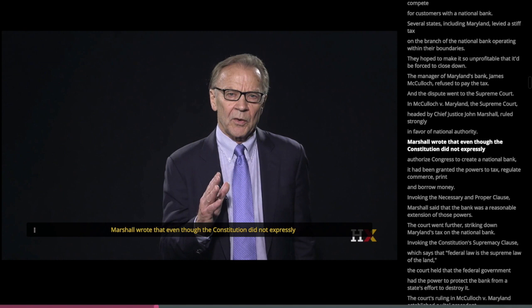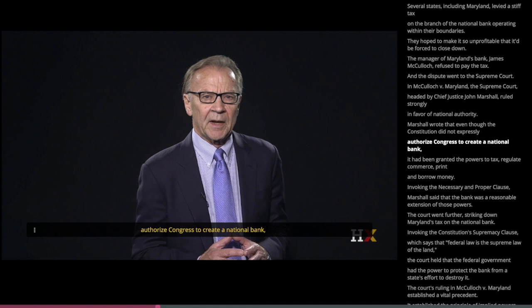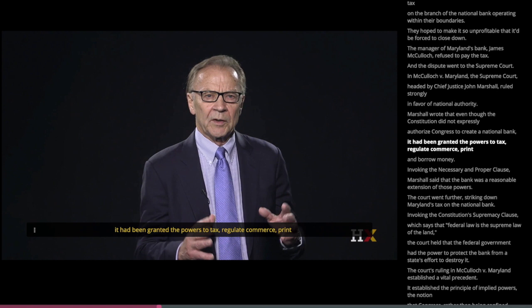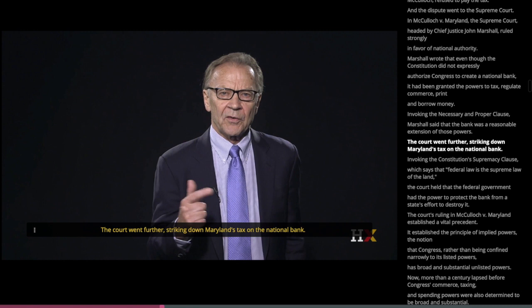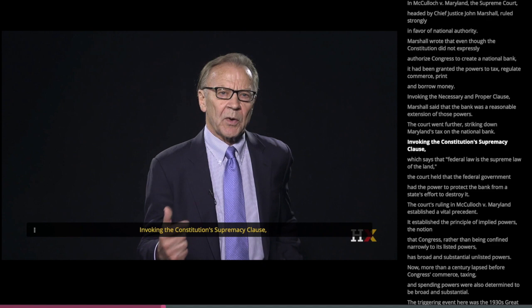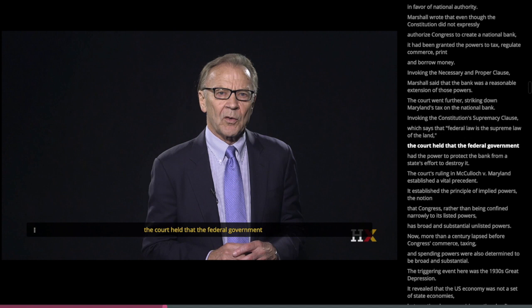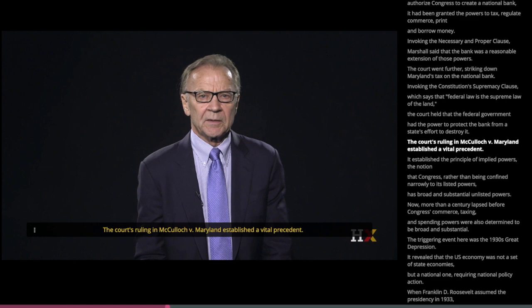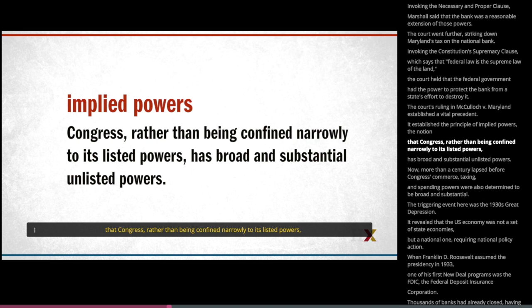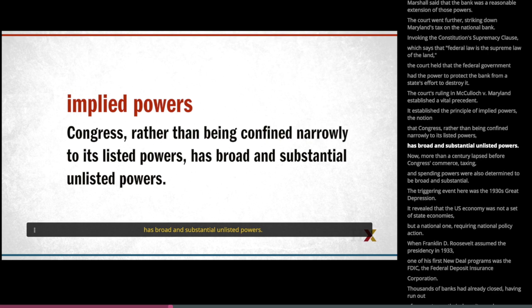Marshall wrote that even though the Constitution did not expressly authorize Congress to create a national bank, it had been granted the powers to tax, regulate commerce, and print and borrow money. Invoking the Necessary and Proper Clause, Marshall said the bank was a reasonable extension of those powers. The court went further, striking down Maryland's tax on the national bank. Invoking the Constitution's Supremacy Clause — which says that federal law is the supreme law of the land — the court held that the federal government had the power to protect the bank from a state's effort to destroy it. The ruling established the principle of implied powers: the notion that Congress, rather than being confined narrowly to its listed powers, has broad and substantial unlisted powers.